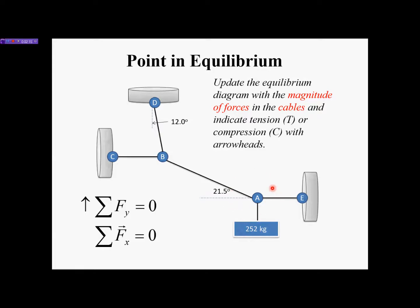When I draw the FBD for point A, I can use each equation one time. When I draw it for point B, I can use each one time. Cables can only have an effect on the point of application in tension. If I pull on the cable it has an effect; if I push, it collapses and there's no effect. Tension is always shown as an arrow acting away from the point of application. Since all of these are cables in tension, every force arrow acts away from the joint.